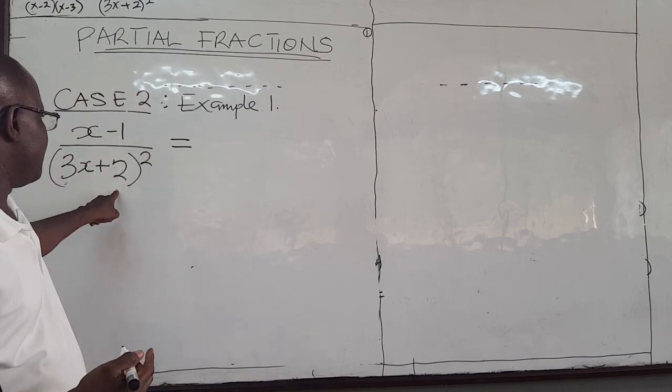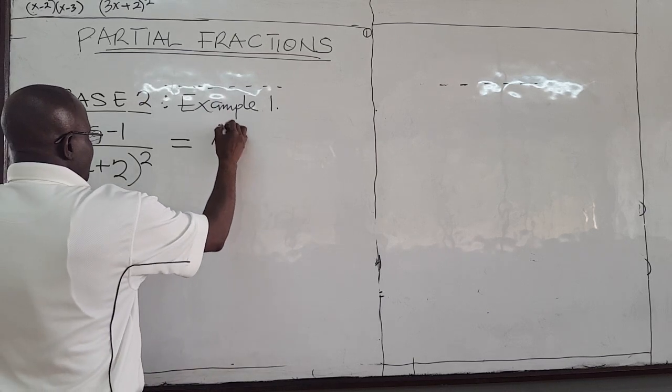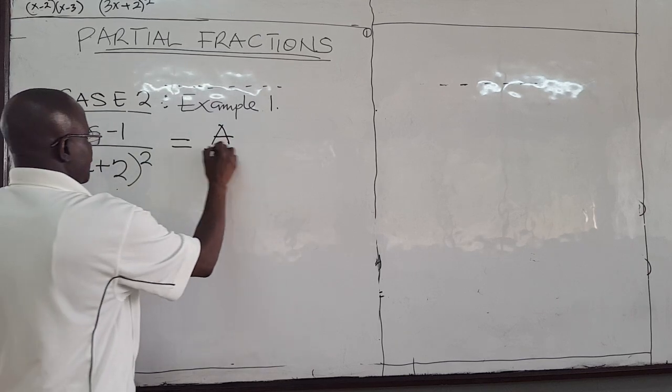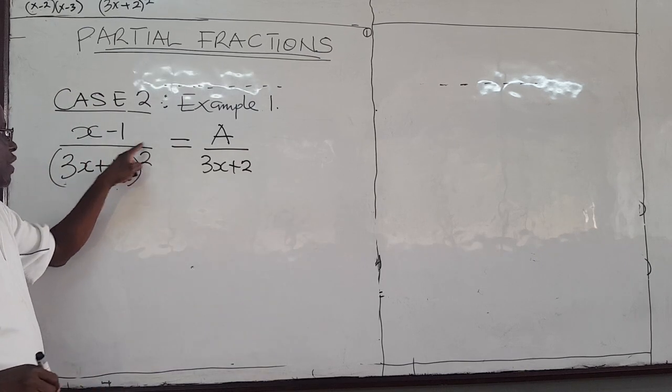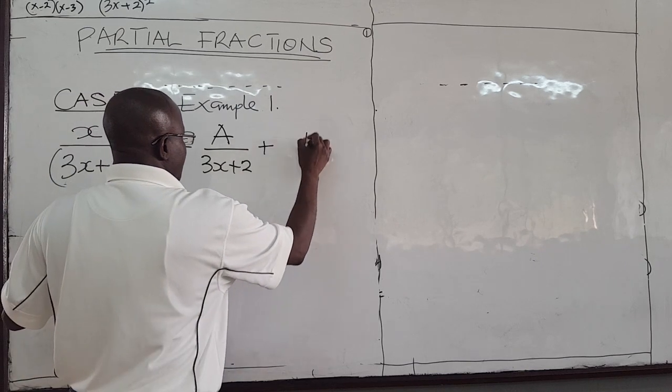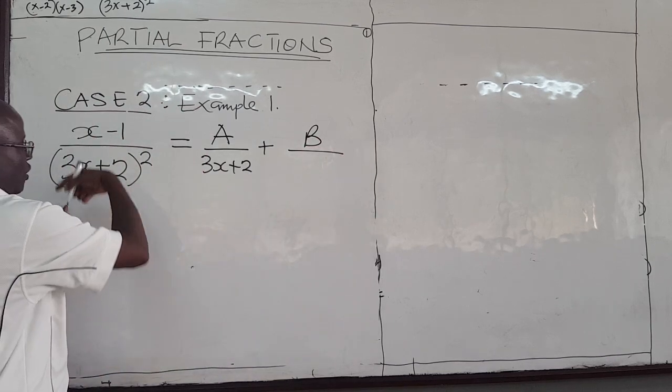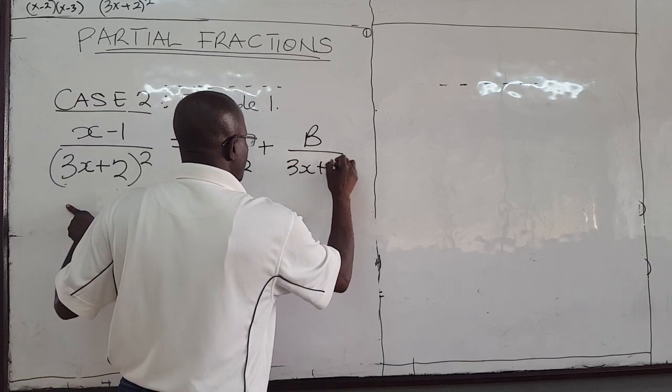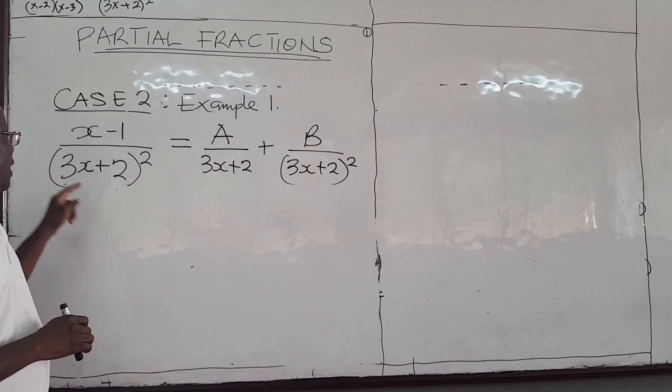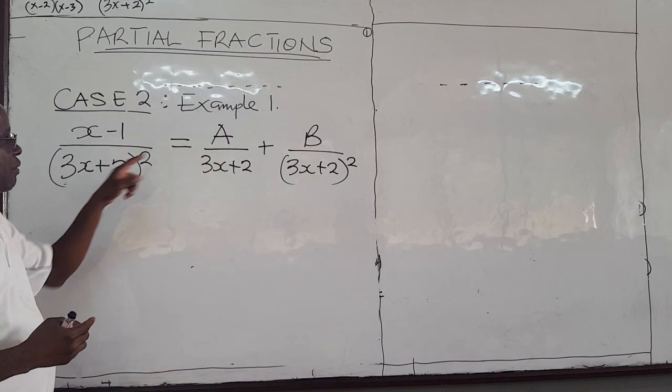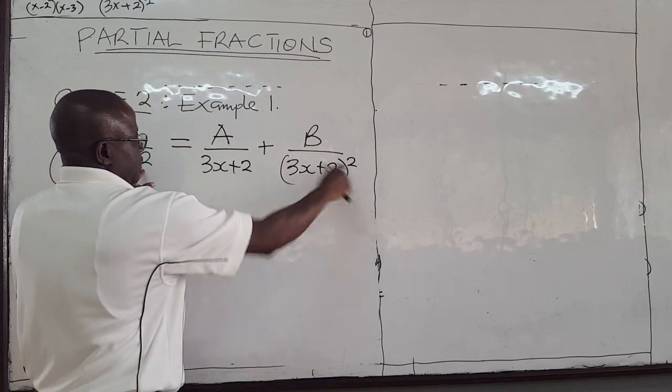So when the linear factors are repeated, this is what you do. You take a constant, constant again because it's linear, and divide by 3x plus 2. But it is raised to the power 2, and so you need another constant here, and then raised to all of this, 3x plus 2 raised to the power 2. But because it's repeated, that is why we need B as well.